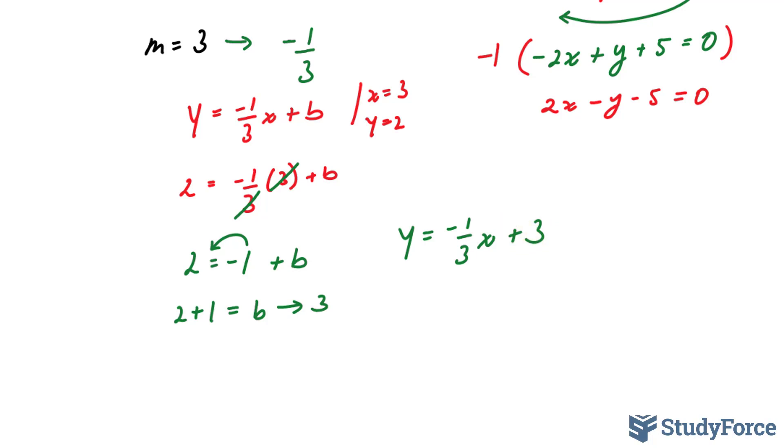We need to convert this now into general form. This is not in general form. So to do that, and unlike before where I brought these 2 terms over, this time I'm only going to bring this y over, where I end up with 0 equals negative 1 over 3 x minus y plus 3.